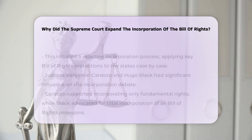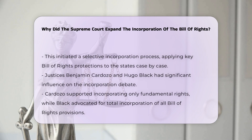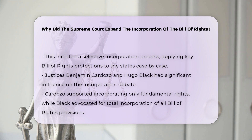Justices like Benjamin Cardozo and Hugo Black played significant roles in this process. Cardozo argued that only rights so rooted in the traditions and conscience of our people as to be ranked as fundamental should be incorporated. Black, on the other hand, advocated for total incorporation, suggesting that all provisions of the Bill of Rights should apply to the states. However, the court generally followed Cardozo's more selective approach.